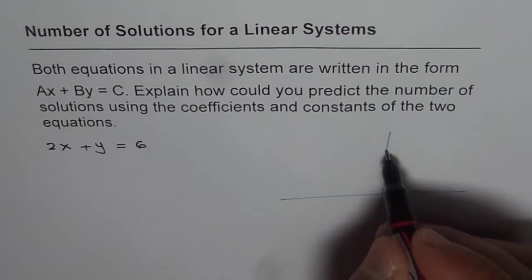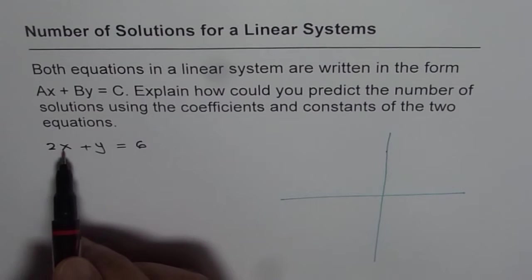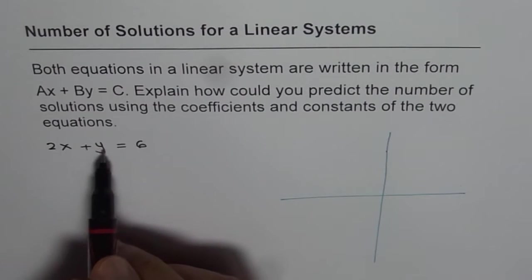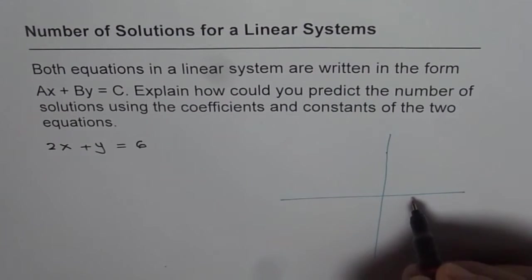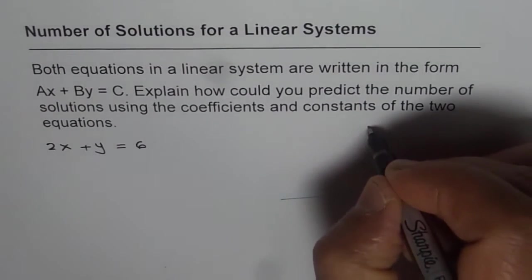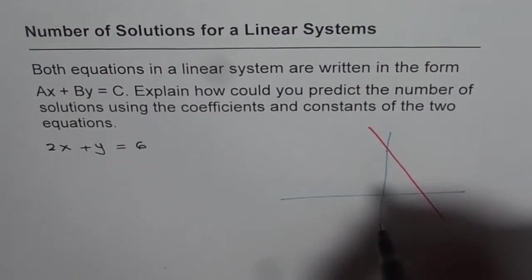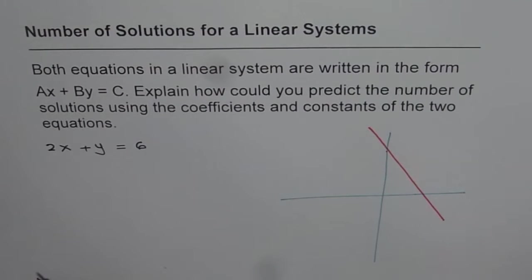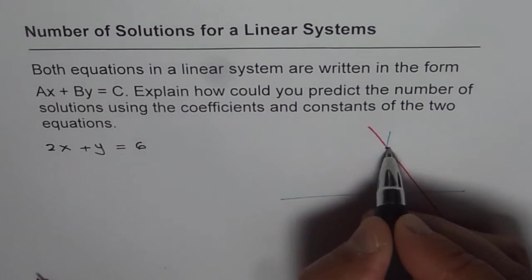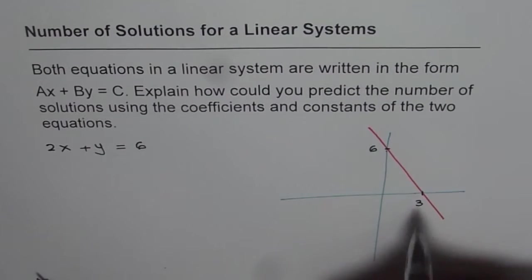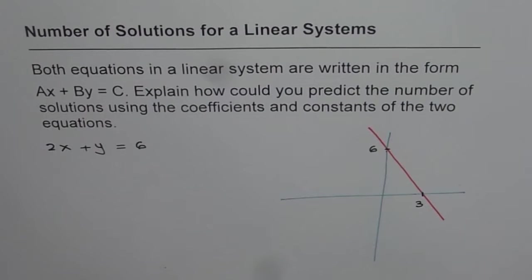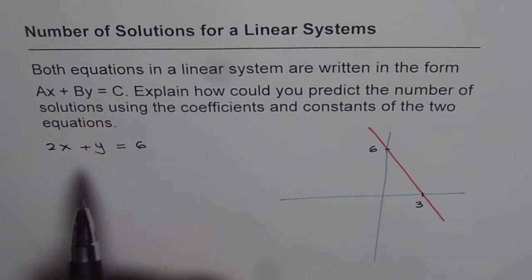Let us say it is somewhere here as 6. And X intercept is when Y is 0. That will give us 6 divided by 2 as 3. So let us say here. So we can draw this line kind of like this. Now, we'll say this point is 6 as the Y intercept and here we have plus 3 as the X intercept.